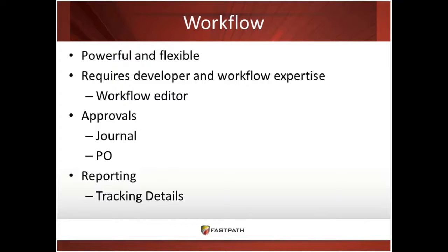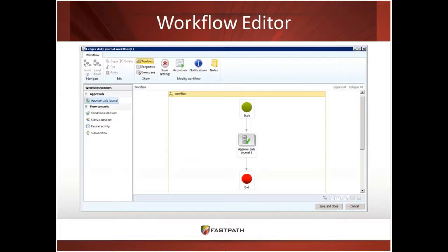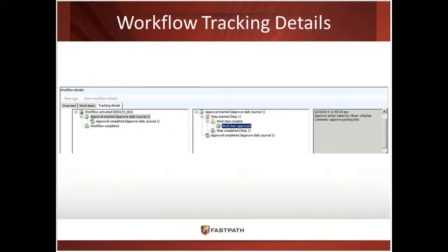The tracking details allow you to look into each workflow and see who approved or executed each step and any details they provided. Looking at the workflow editor in AX 2012, you can see where the workflow starts, each step, and where it ends. In the tracking details, each step of the workflow is broken out, and if you click on one of those steps, you can see who approved that action, any comments they provided, and the date and time that action was approved — giving you a complete log of all approvals.